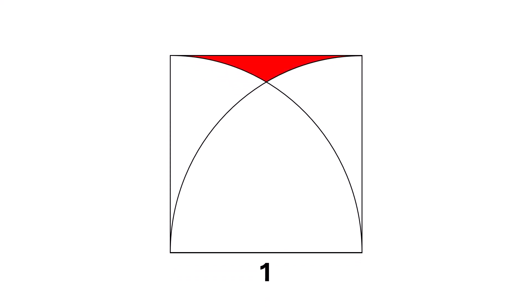Today we'll be looking at an interesting geometry problem. Start with a square. The side length of the square is 1.